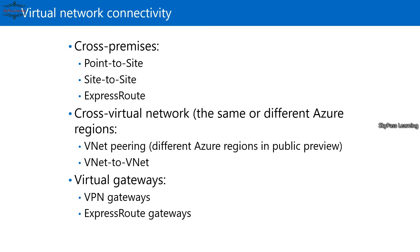ExpressRoute is the best option but is a bit more expensive. It is used by large organizations and relies on a private connection between your data center and the Azure data center through a non-Microsoft connectivity provider. It gives a completely private, secure connection between on-premises and Azure data centers, with maximum bandwidth and less latency, though the cost is higher.